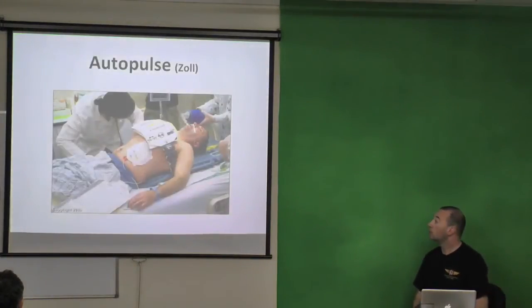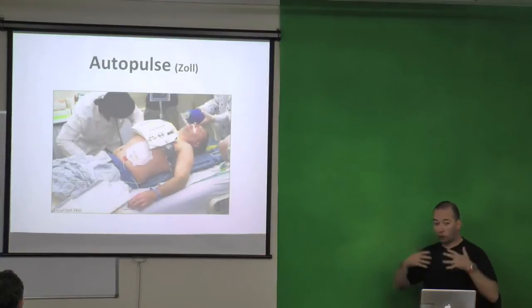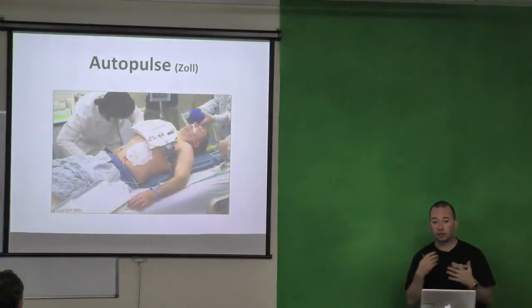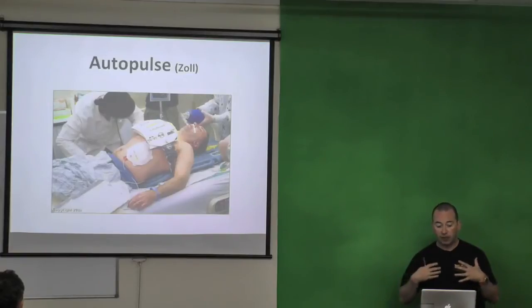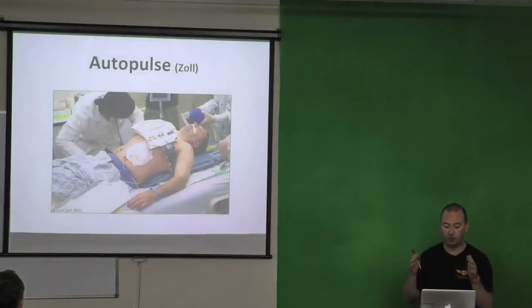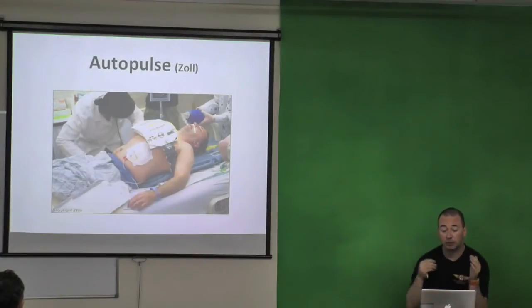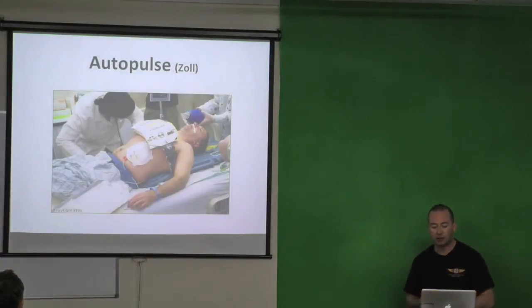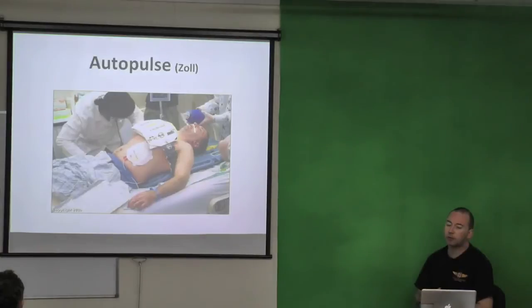The other one is what's called a load distributing band type of device, and that's the autopulse, which is marketed by Zoll. And in this device, the whole chest gets compressed. So instead of the familiar thing where we put pressure just on the sternum, the whole chest gets compressed. And that's sort of going back to the theory of the thoracic pump as opposed to the cardiac pump. So you're compressing the whole chest to try and force blood out of the chest as opposed to directly out of the heart. And again, the elastic recoil in the chest will, in theory at least, suck blood back in.